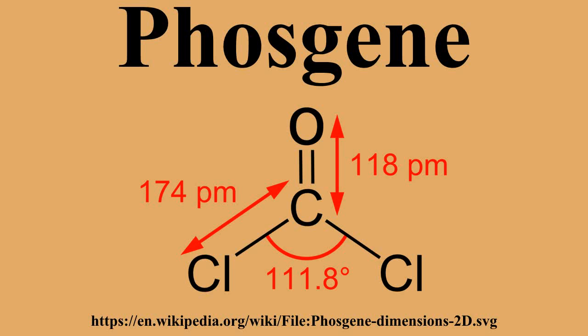Phosgene was subsequently used by the Imperial Japanese Army against the Chinese during the Second Sino-Japanese War. Gas weapons such as phosgene were produced by Unit 731, authorized by specific orders given by Hirohito himself, transmitted by the Chief of Staff of the Army. For example, the Emperor authorized the use of toxic gas on 375 separate occasions during the Battle of Wuhan from August to October 1938.